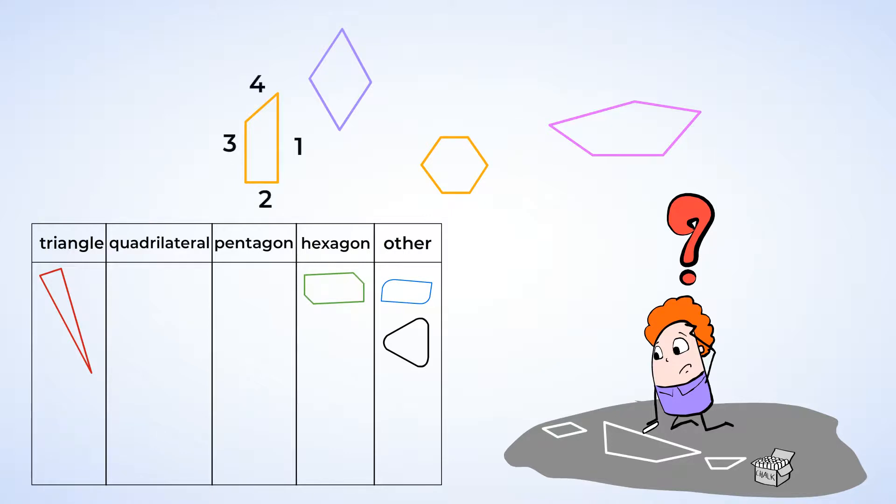The orange shape has 4 sides and 4 angles. So it's a quadrilateral. And so is the purple shape. You can count 4 sides and 4 angles on it too. And we've just got 2 shapes left. Now check out the yellow one. Count the sides, 6 sides and 6 angles. That's right, it's a hexagon.